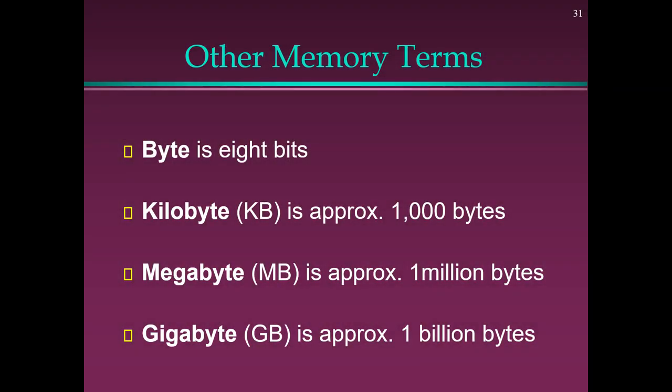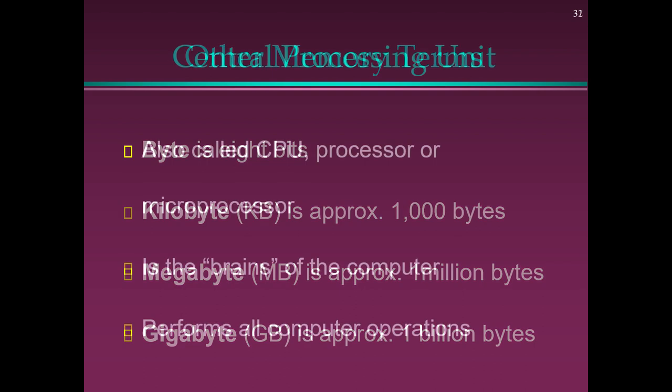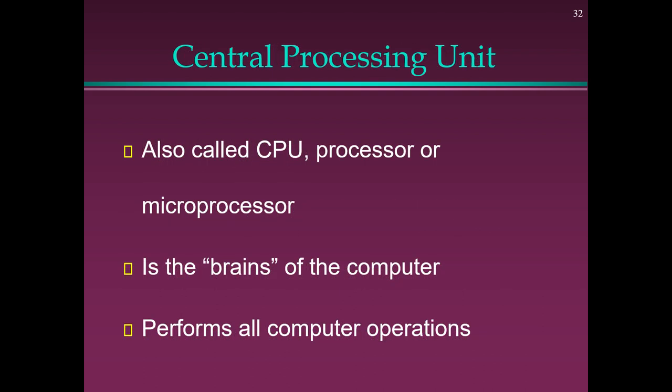Other Memory Terms: A byte is 8 bits. A kilobyte is approximately 1,000 bytes. A megabyte is approximately 1 million bytes. A gigabyte is approximately 1 billion bytes.